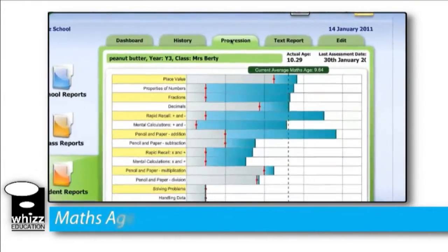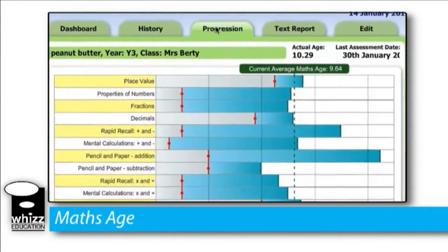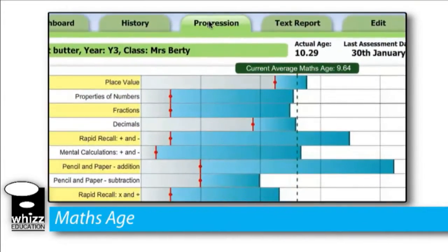Maths age is a simple measure to represent a student's current maths ability. With peanut butter over here, we're saying that their maths age is 9.64, and where the value of maths age really comes into play is as a comparative measure.